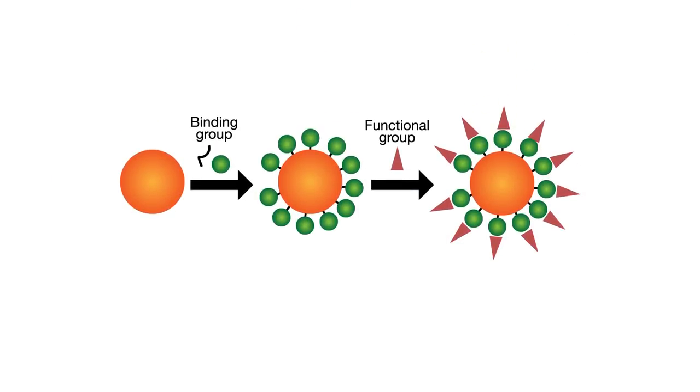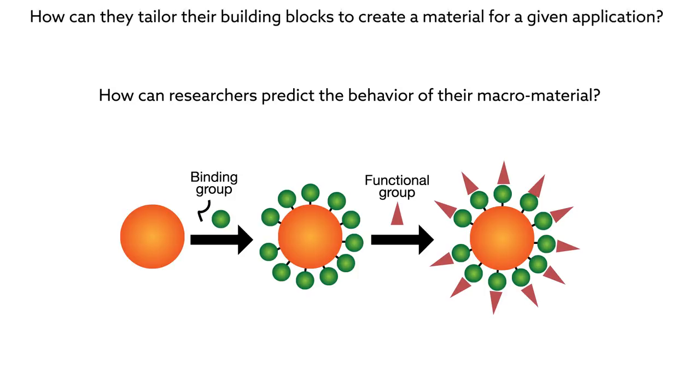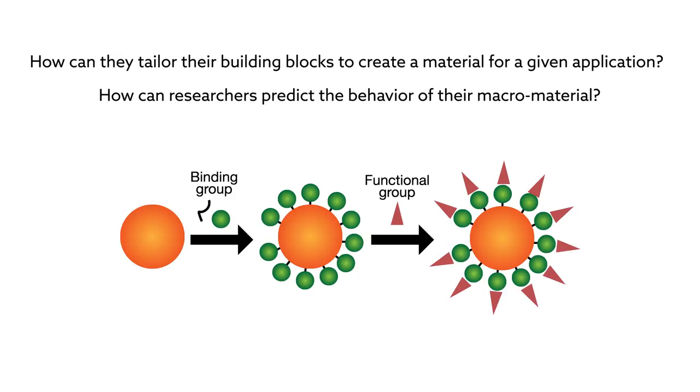Given that a few simple building blocks can give rise to an enormous design space, how can researchers predict the behavior of their macromaterial? Or, perhaps more importantly, how can they tailor their building blocks to create a material for a given application?